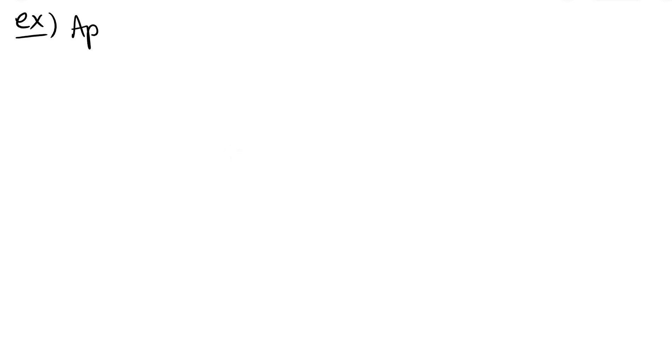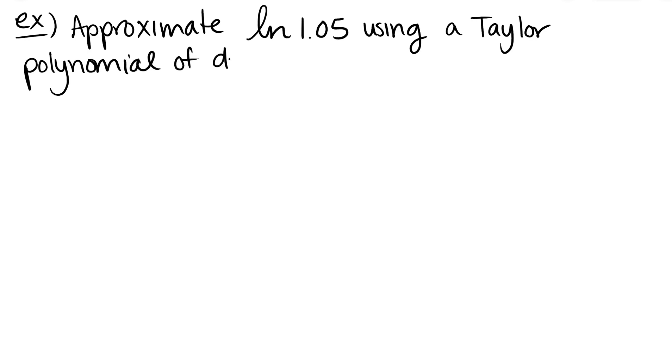But let's say, let's approximate the number that looks a little bit weird. So let's approximate the natural log of 1.05 using a Taylor polynomial of degree 3. Or n equals 3. So what I need to figure out is, what is the function and where am I going to center that function? So degree 3.